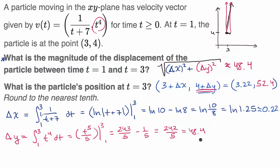You might notice the total displacement magnitude of 48.4 looks the same as our change in y. The magnitude of displacement is actually slightly more than 48.4, but when rounded to the nearest tenth, we get 48.4. This is because our change in x was so small (0.22) compared to the change in y, meaning the hypotenuse was only slightly longer than the vertical component alone. In general, the magnitude of displacement will be larger than either change in x or change in y individually.